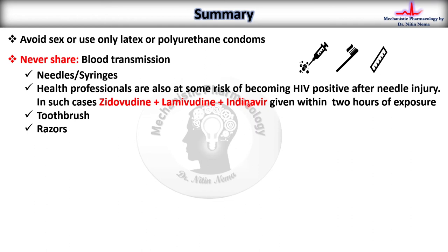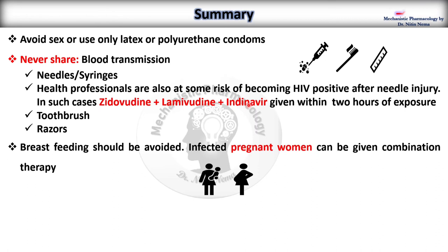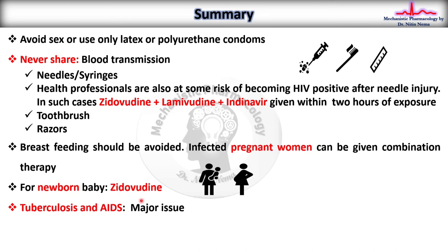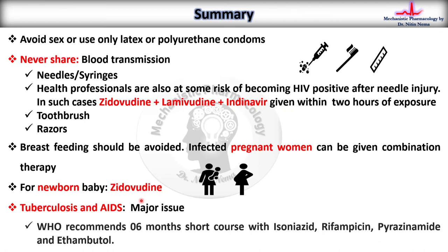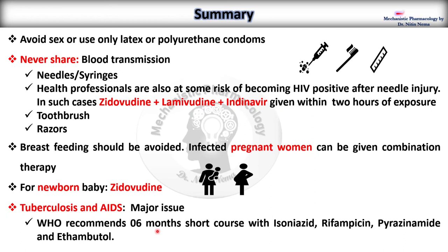Breastfeeding should be avoided by HIV-positive mothers. Infected pregnant women can be given combination therapy. For newborn babies, zidovudine is the best choice. Tuberculosis is a major issue with AIDS, and WHO recommends a six-month short-course therapy with a combination of isoniazid, rifampicin, pyrazinamide, and ethambutol. Other complications include Pneumocystis pneumonia, candidiasis, cytomegalovirus, cryptococcal meningitis, and cancers like lymphoma.